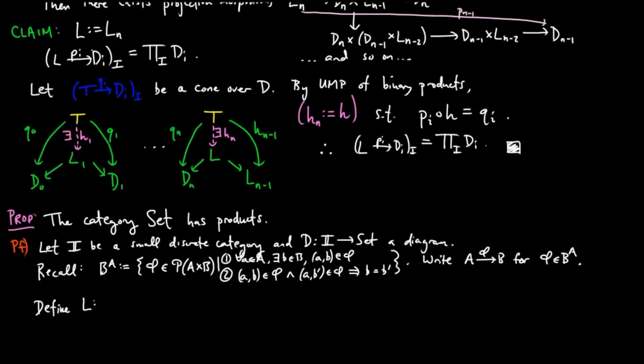We write elements in this set as arrows and switch to function notation as opposed to relation notation. Then we define the set L as those set maps from i, the object set of the category I, to the union of sets D sub i such that phi evaluated on i is in D sub i.